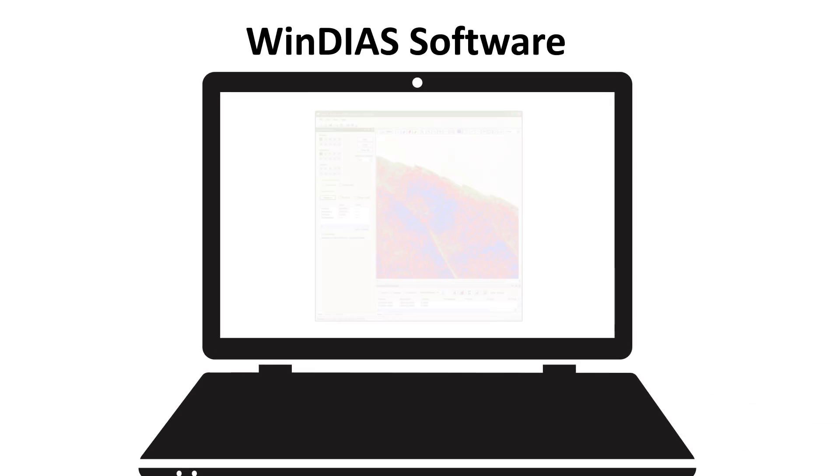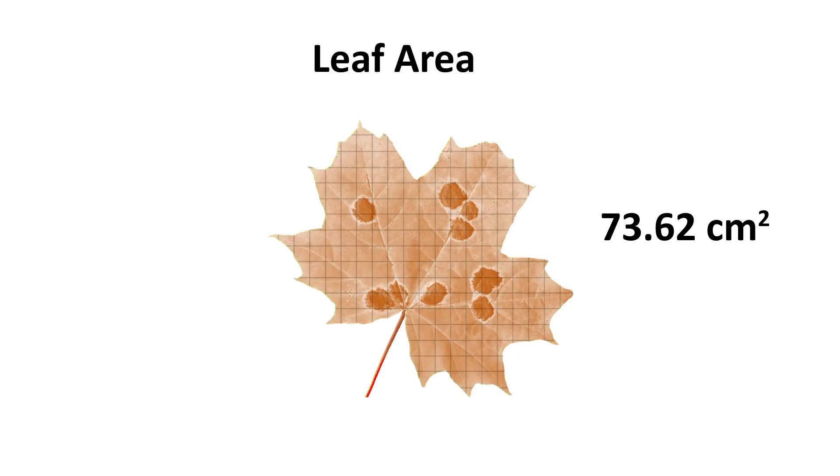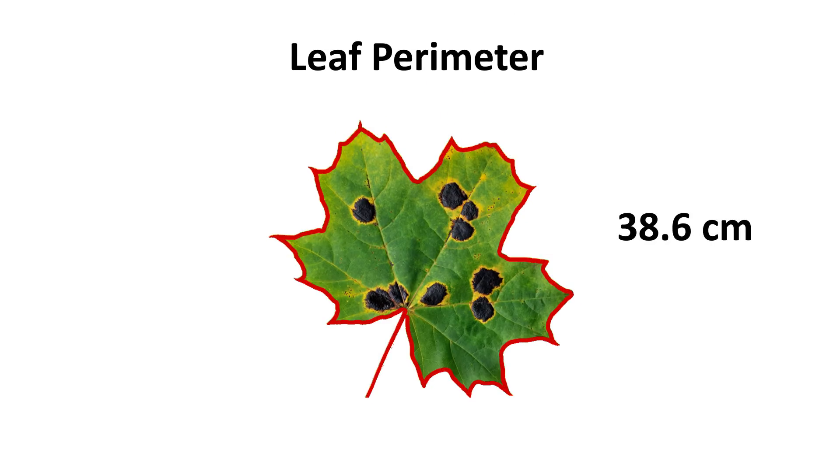Once a leaf image is uploaded, the software can calculate many values. These include leaf area, leaf perimeter and leaf length or width.